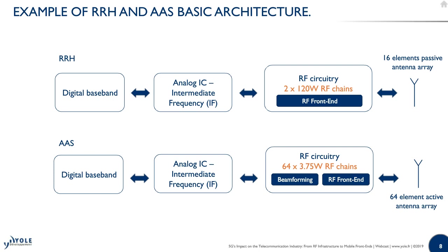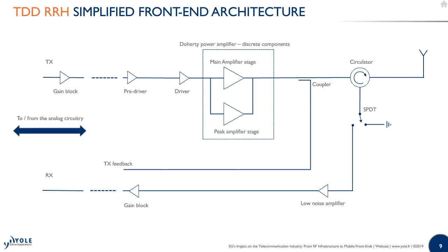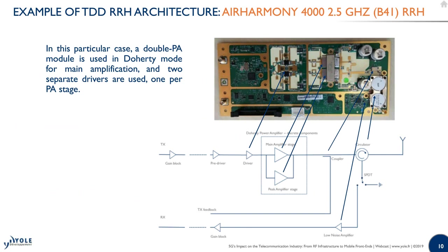The second important difference is that you now need a beamforming module in your system. With remote radio head-based systems you only have the amplifying front end, but with active antenna systems you have to add the beamforming. A standard remote radio head has only a few components: a pre-driver, driver, door-type amplifier, a circulator to the antenna, and on the receive path a high-power switch and a low-noise amplifier gain block to reach the transceiver.